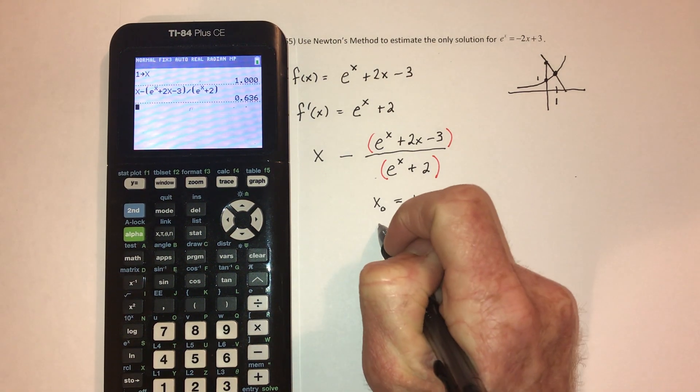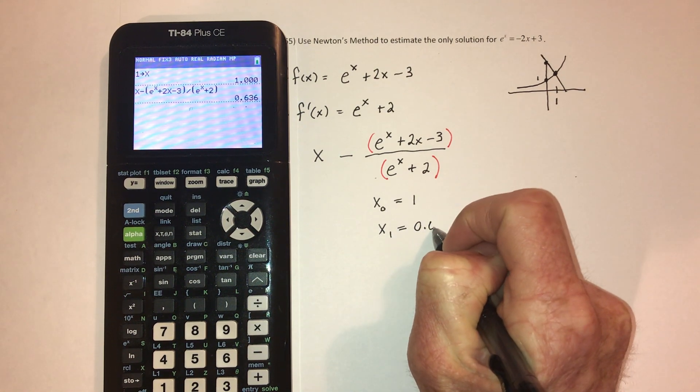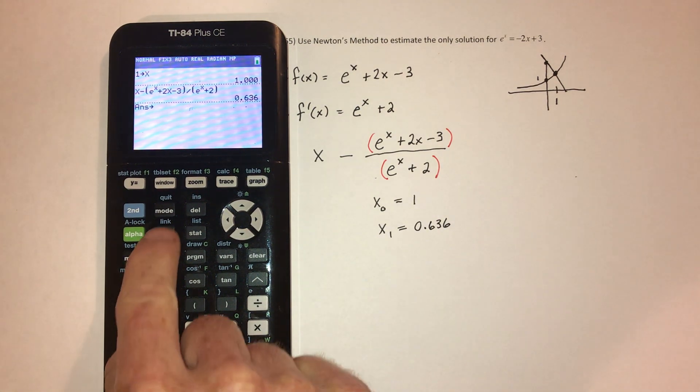And it says, actually, your answer should have been closer to a 0.636. Then store that as x.